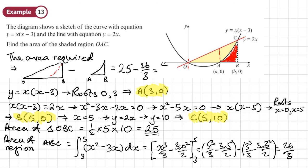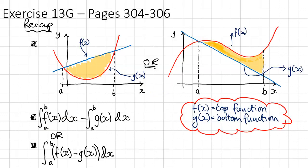That gives a final answer of 49 over 3. So that is the required area. Sometimes you do need to think carefully about how to find these areas — chopping the region into pieces often helps. You should now be able to do exercise 13G on pages 304 to 306, then follow that by completing the next exercise.